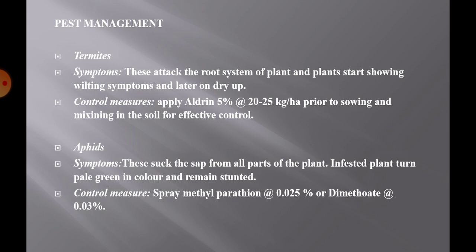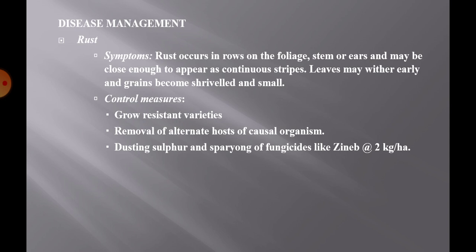Disease management: Rust is an important disease in barley. Rust occurs in rows on the foliage, stem, or ears and may appear as continuous strips. Leaves may wither early and grains become shriveled and small. To control rust, grow resistant varieties, remove alternate hosts of the causal organism, and apply dusting sulfur or spray fungicides like Zineb at the rate of 2 kg per hectare.